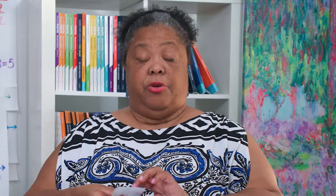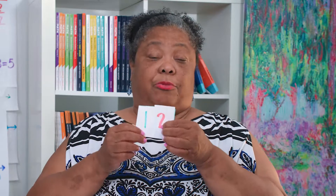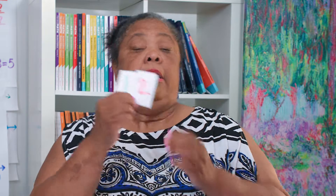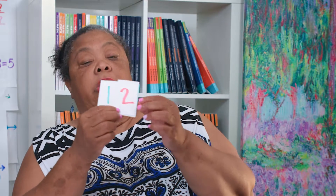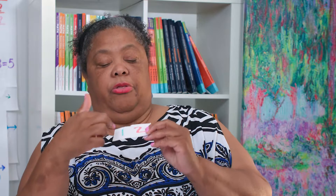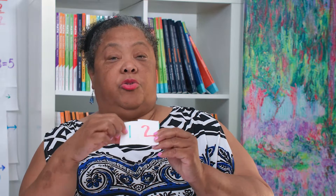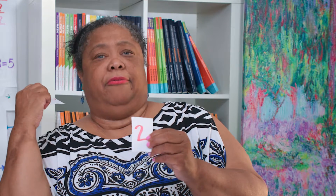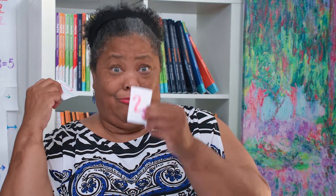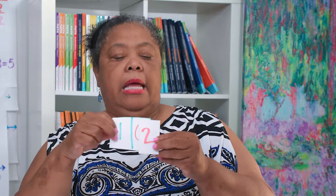I'm going to then continue working with abstract using the hidden zero cards. So this is the number 12. If I take 10 away, what's left? Two, right?